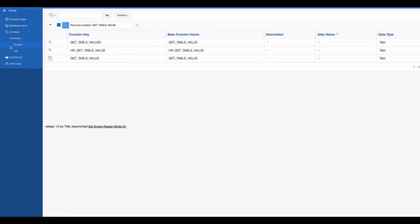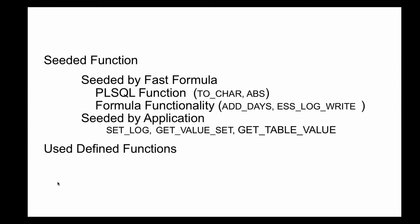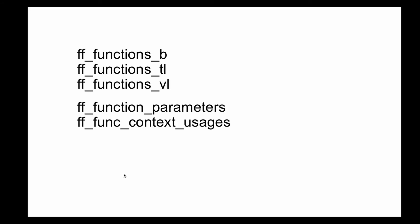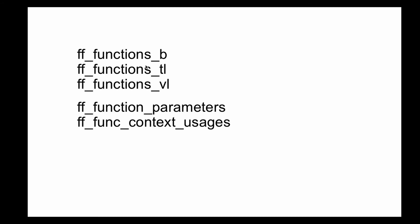Now we will come back to user-defined functions. What are user-defined functions? Just to give you an example — if you have your local deployment, you can create your own function. Basically there are two tables involved: one is the B table, the other is the TL table, which is the language table. The B table has the basic functionality, while the TL table holds language-specific information. Then there is the VL, which is a combination of both.